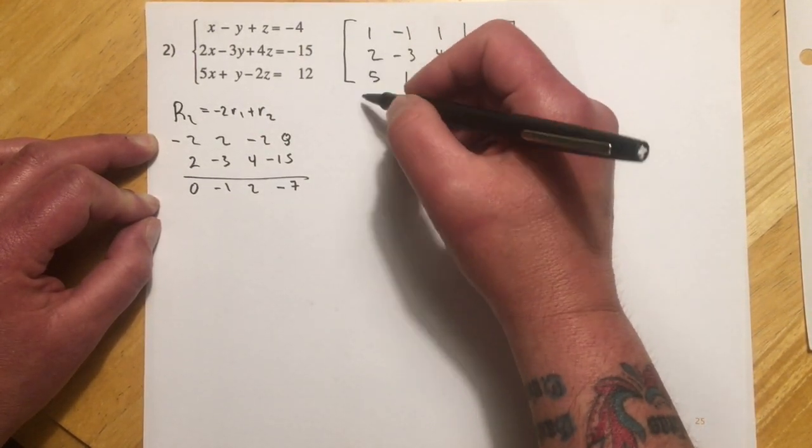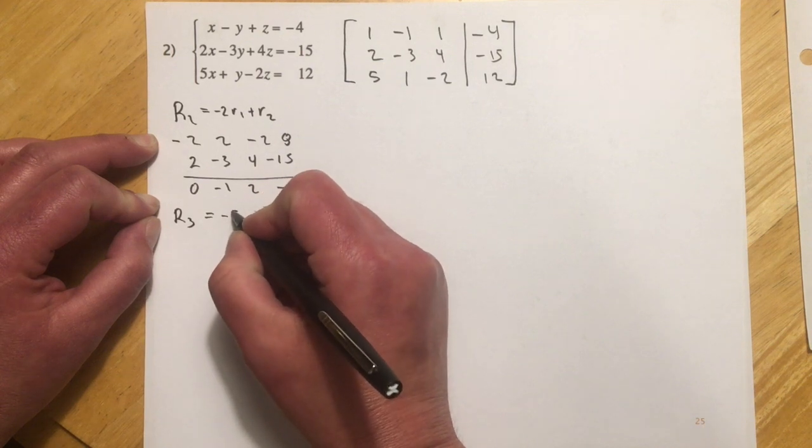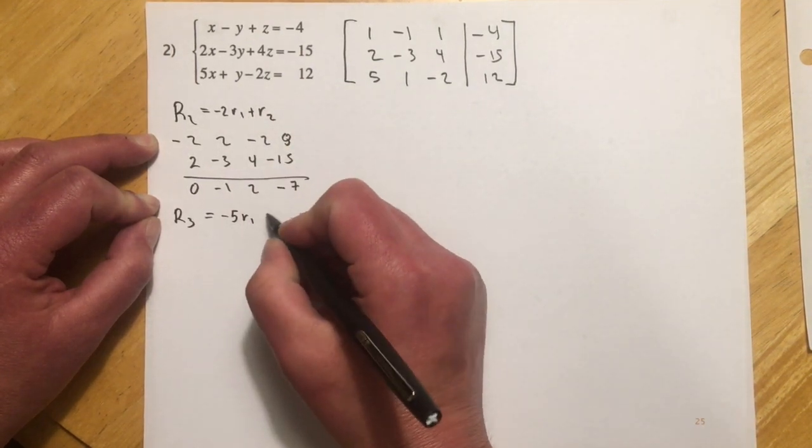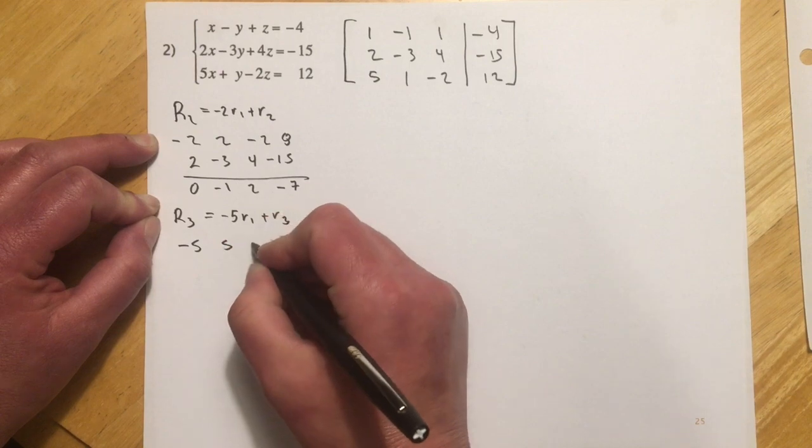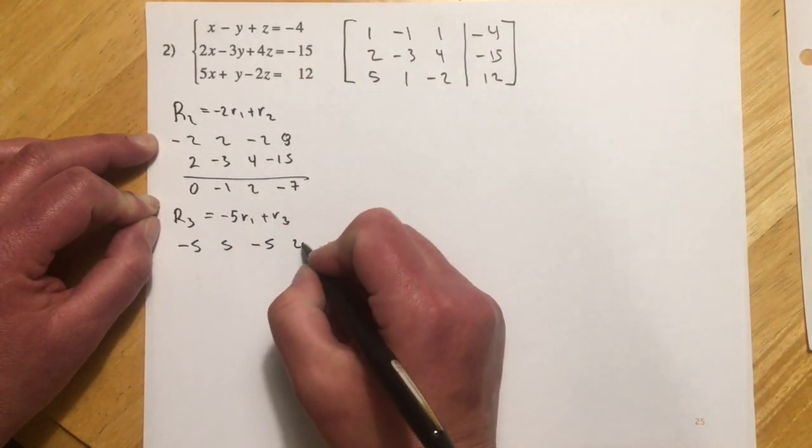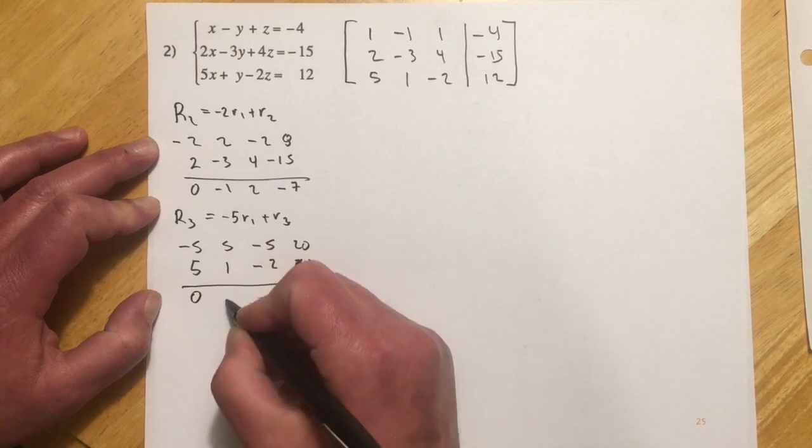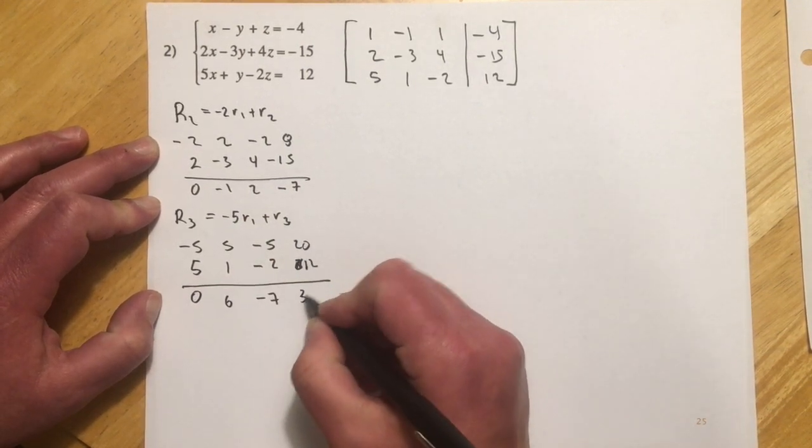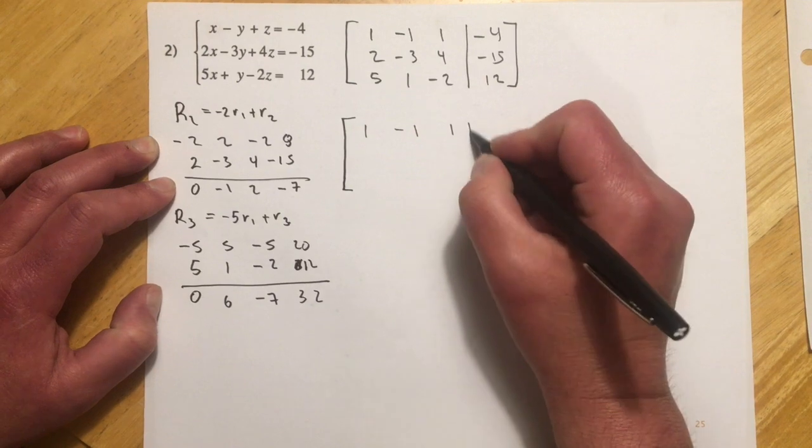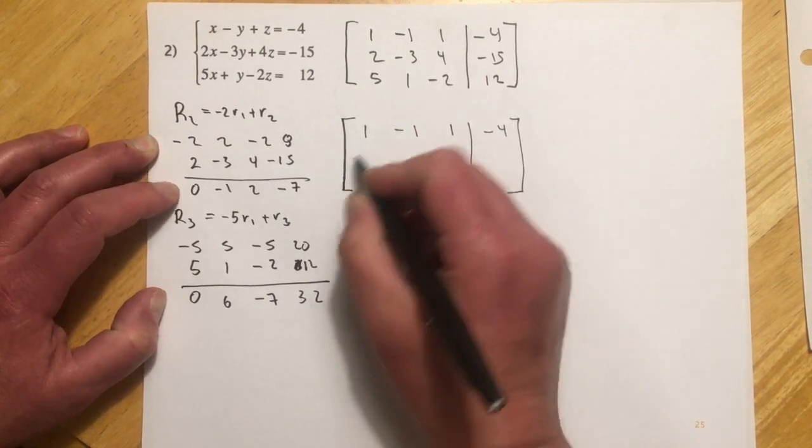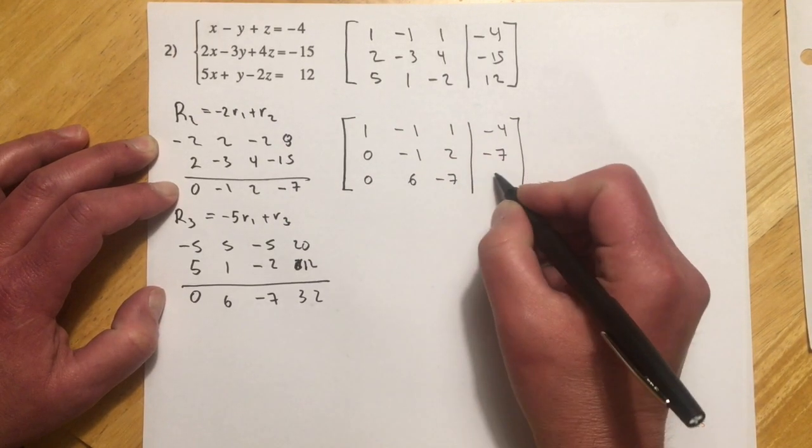And at the same step, I'm going to, since I'm operating on two different rows, I can do it all at once. So I'll make a new row 3. So I'm going to go negative 5 times row 1, and then add that to row 3. So that would look like negative 5, 5, negative 5, and then negative 5 times 4 for 20. And then copying this one down. And so let's see, we'll get our 0, 6, negative 7, and 32. So let me kind of reorganize that right here. So the first row didn't change. Second row is now 0, negative 1, 2, negative 7, and 0, 6, negative 7, and 32.